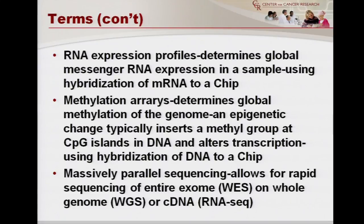Last but not least, and really what will eventually replace all of these chip technologies, is the development of massively parallel sequencing. This allows rapid sequencing of either the entire genome — whole exome sequencing, or WES — or whole genome sequencing, or WGS. Remember most DNA doesn't encode proteins, so whole exome sequencing looks at genes that encode proteins, while WGS covers the rest. We now understand that non-coding DNA has a lot to do with how genes function. You can also take cDNA, which is a copy of RNA, and do RNA-seq. They all use the same approach, which I'll go through briefly.